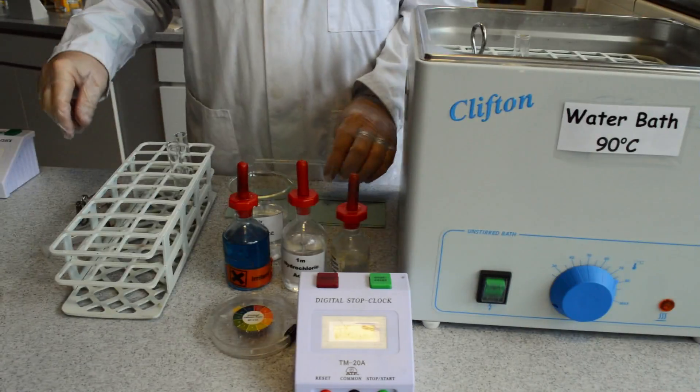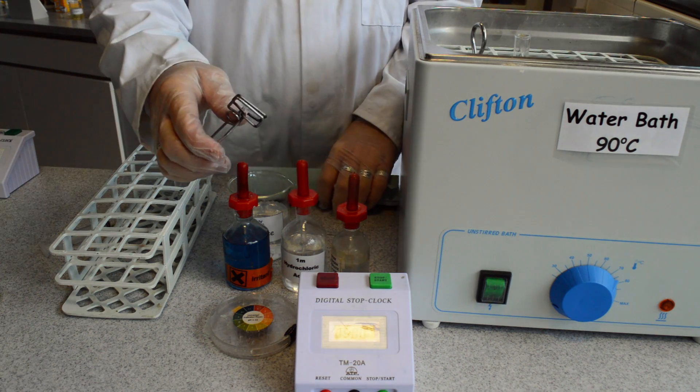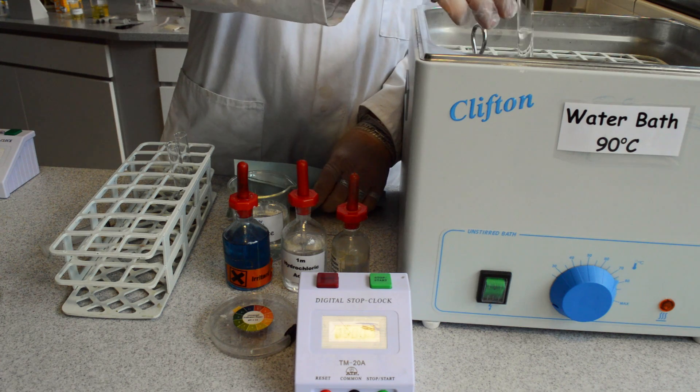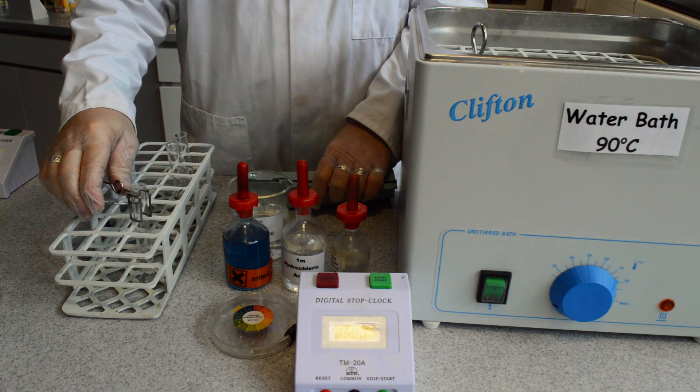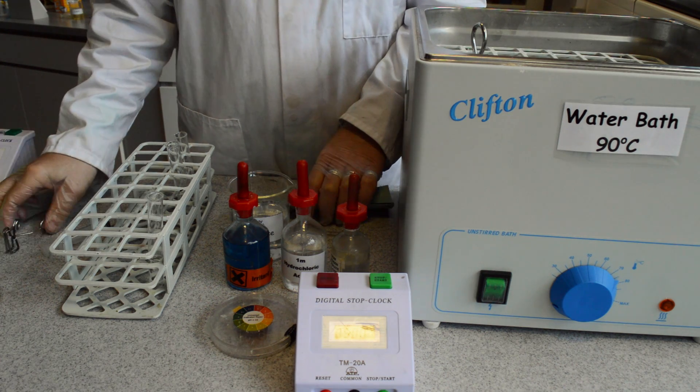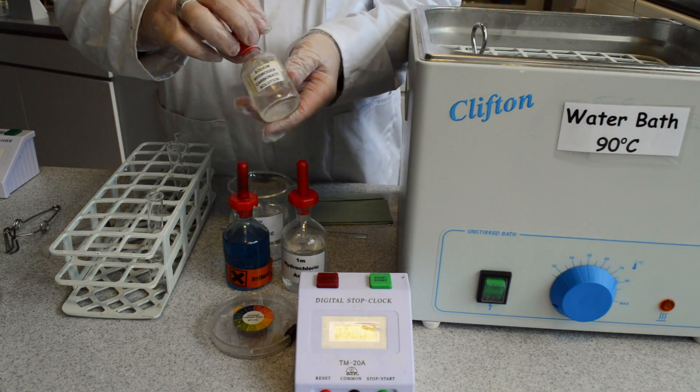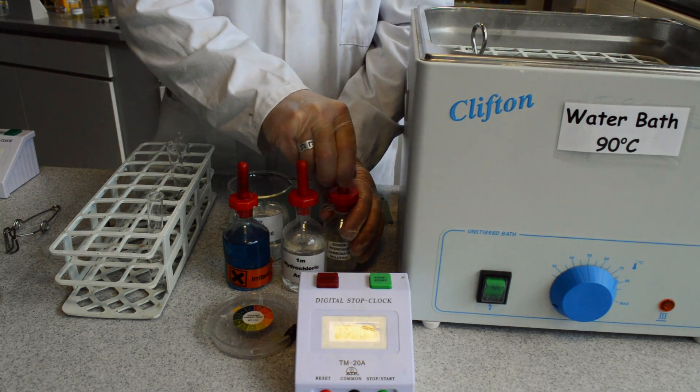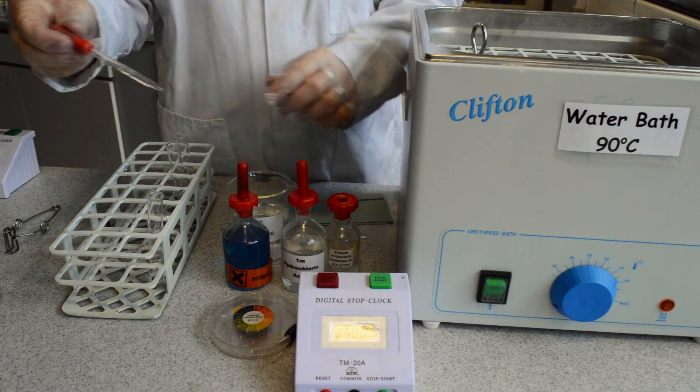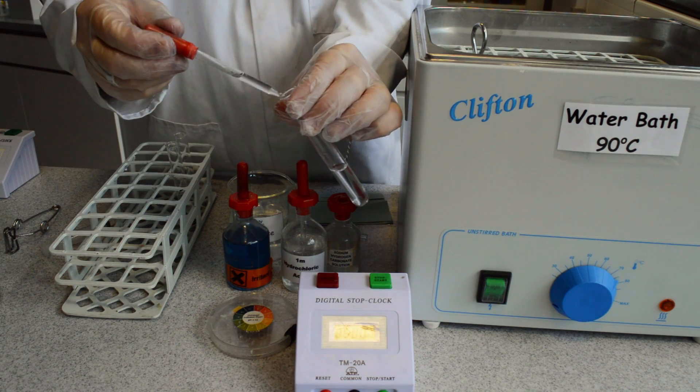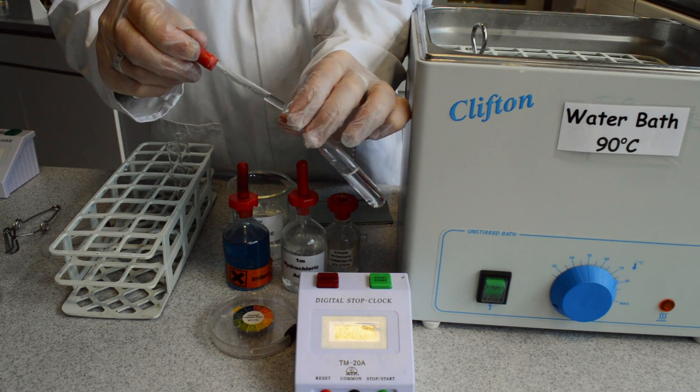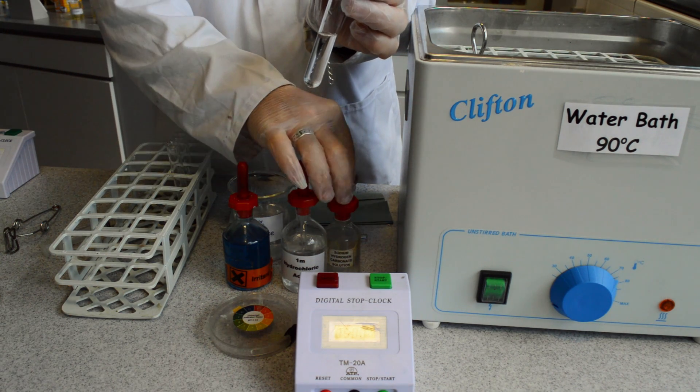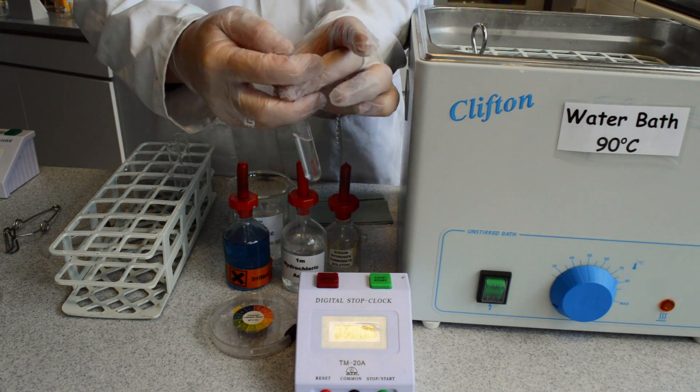Remove this sample from the water bath, again being careful to use test tube holders or a paper towel as it will be hot. Then add some sodium hydrogen carbonate solution to neutralise the sample as it will be acidic from the adding of the hydrochloric acid. You can test that your sample is neutralised by using universal indicator paper. Please invert the tube to ensure the contents are mixed together.